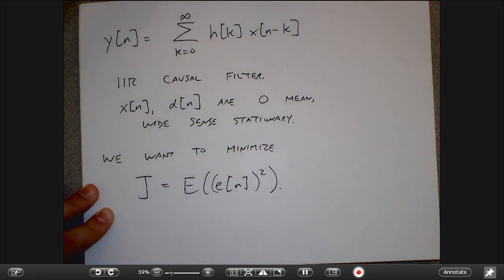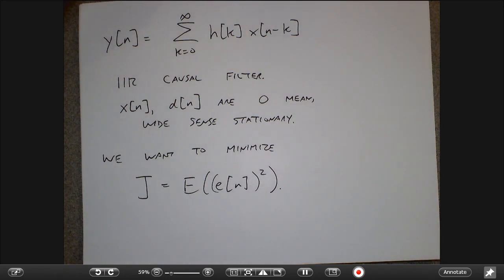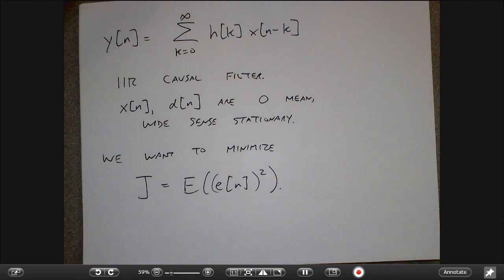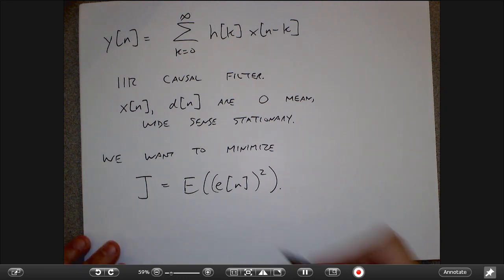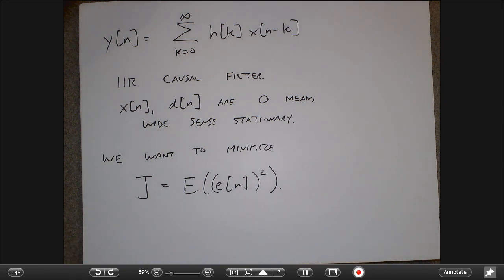We want to minimize this function J, which is the expected value of the error squared. I'm going to try and do this all with real variables to make the notation easier. D of N is likely a past or future value of X of N. We're going to minimize this over the filter coefficients.